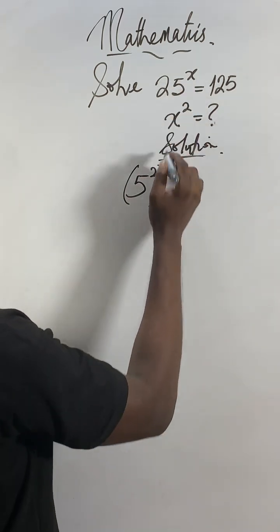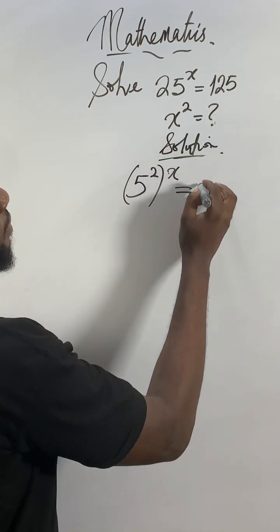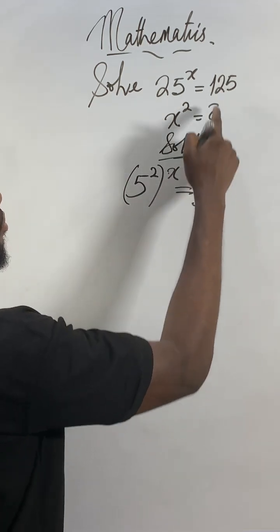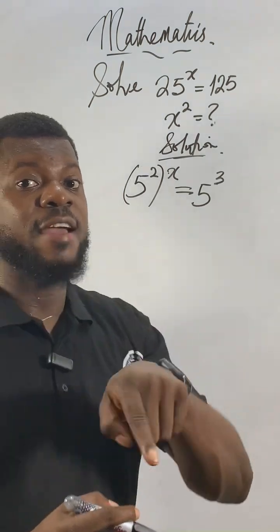What of this x? So it's 5 to the power of 2 raised to x. This 125 is 5 to the power of 3, because 5 times 5 is 25, 25 times another 5 is 125.